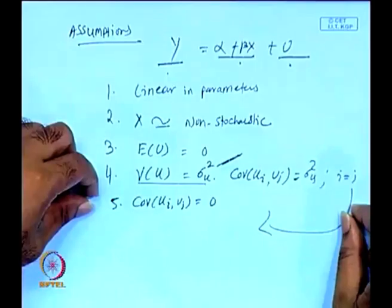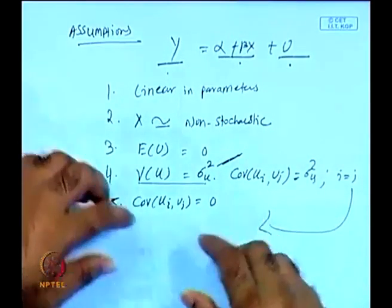The covariance of uᵢ and uⱼ should be equal to 0. If it is not equal to 0, there is a problem called autocorrelation, or sometimes serial correlation. Once we have the estimated model, we get error terms u₁, u₂, u₃, and we track the relationship among them. If the cross-correlations are not equal to 0, it will lead to serial correlation.